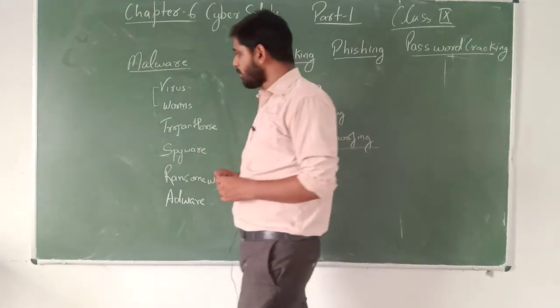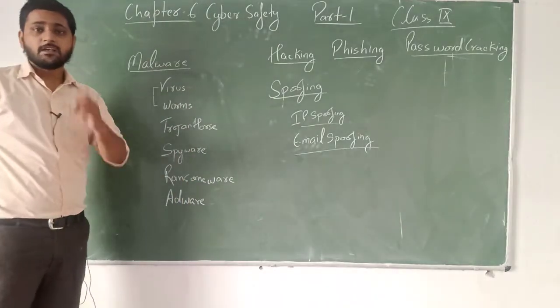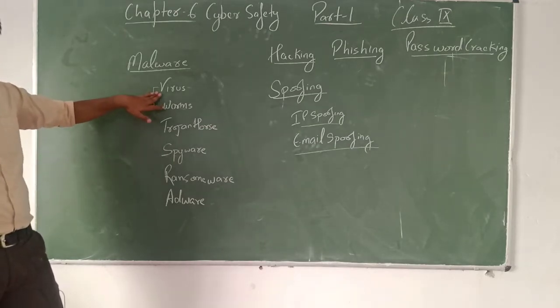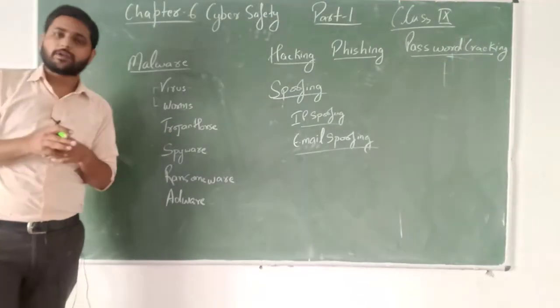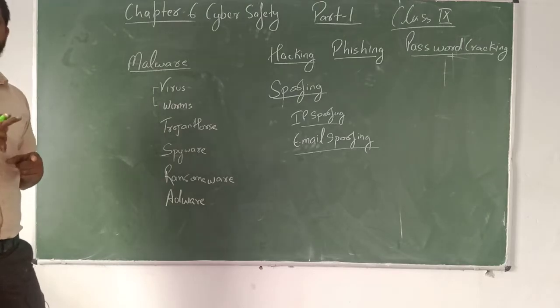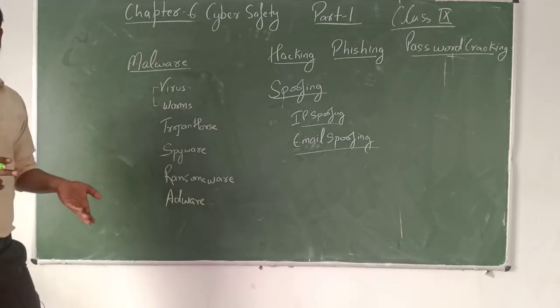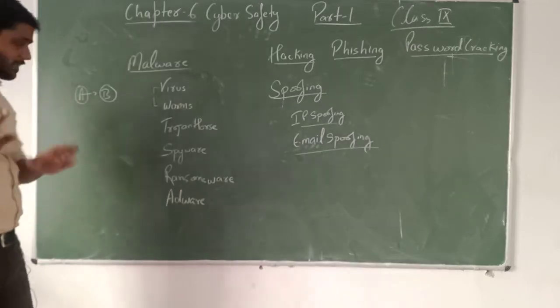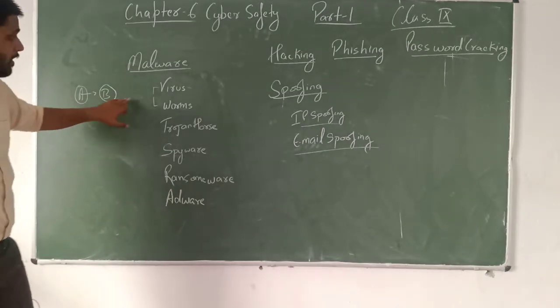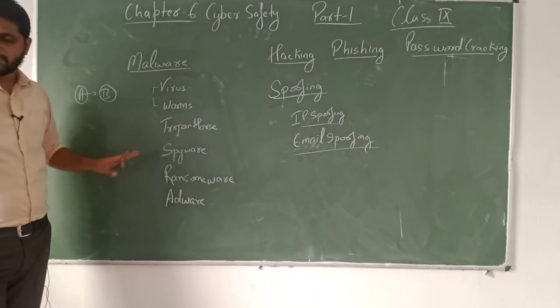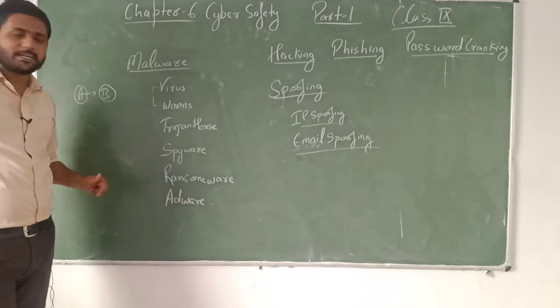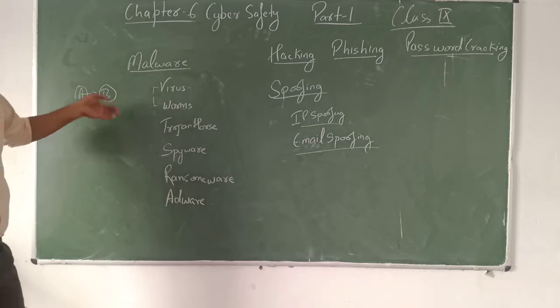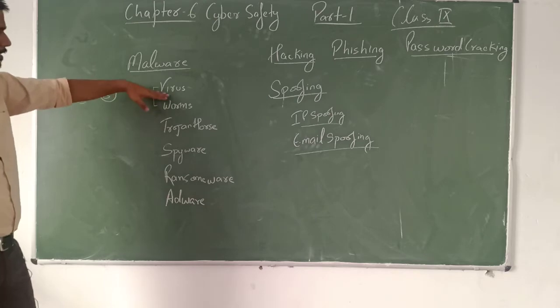Talking about worms, worms hold one more property that is easy crawling property. Now virus does not - a virus intentionally transmits from one computer to another. Virus never transmits from one computer to another computer without the knowledge of the user. If a virus is transmitted from source A to B, it means either B is knowing about it or A is knowing about it. But in case of worms it is not there. It can crawl. If you insert a pen drive inside a system of A and A has a worm virus, so it can easily crawl, the pen drive will easily crawl to B system.